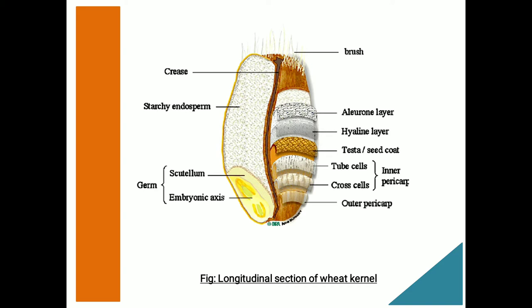Along one side of the grain there is a crease, which is due to enfolding of the aleurone and all covering layers. This crease not only makes it difficult for the miller to separate the bran from the endosperm with a good yield, but also forms a hiding place for microorganisms and dust.